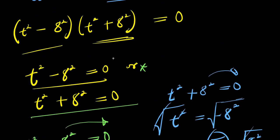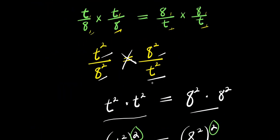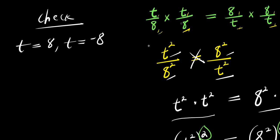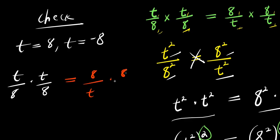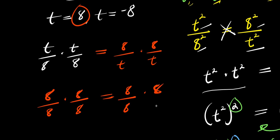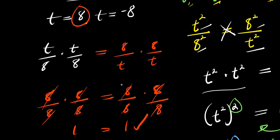Let's verify each solution, starting with the real ones. For t equals 8, substituting into t over 8 times t over 8 equals 8 over t times 8 over t, we get 8 over 8 times 8 over 8 on the left, and 8 over 8 times 8 over 8 on the right. Everything cancels, giving 1 equals 1, so t equals 8 satisfies the equation.